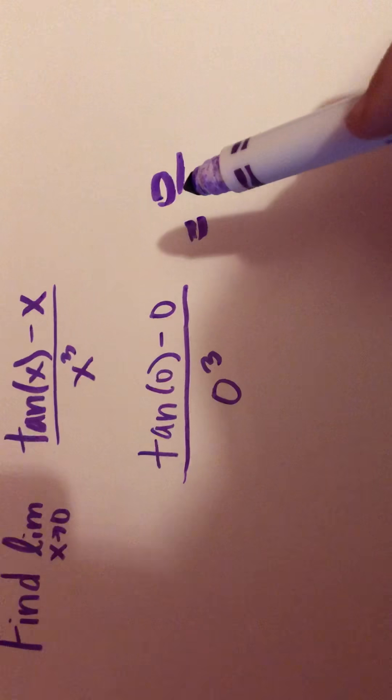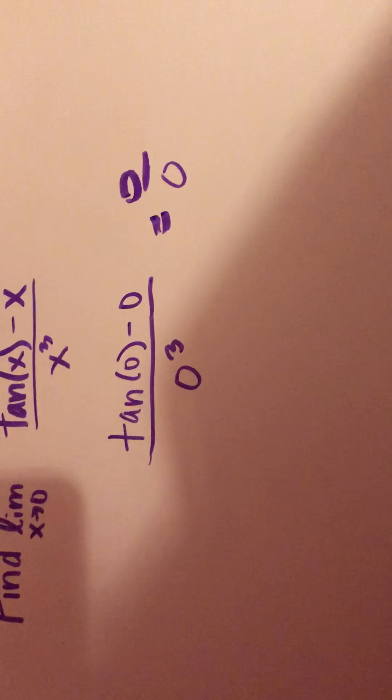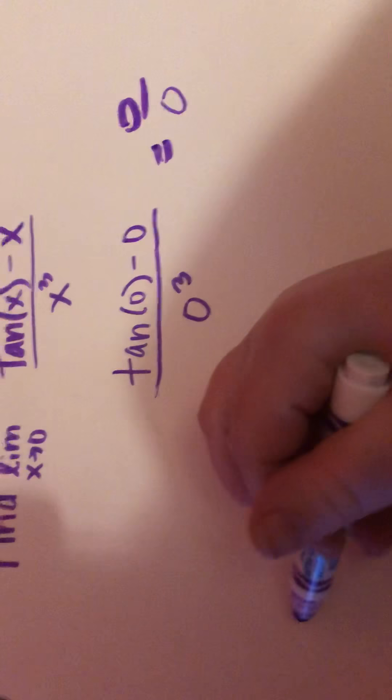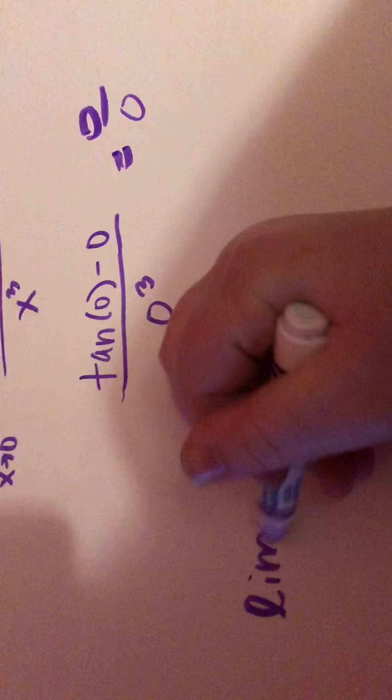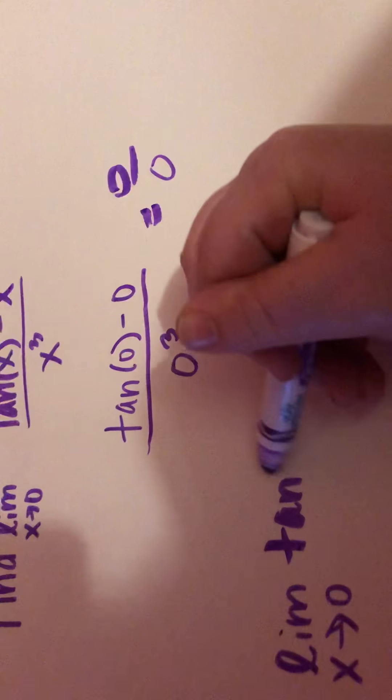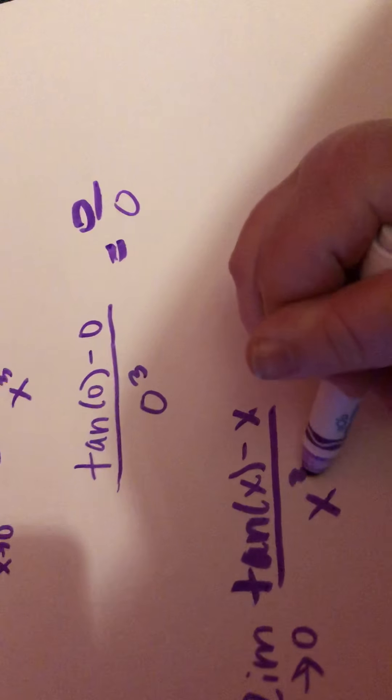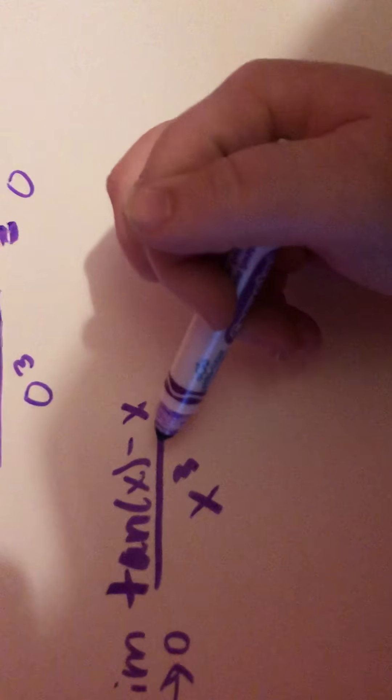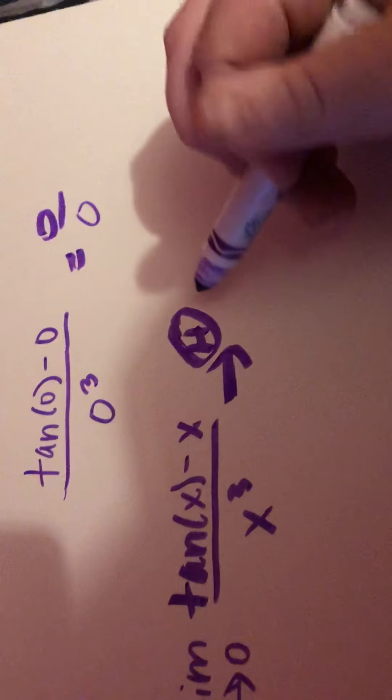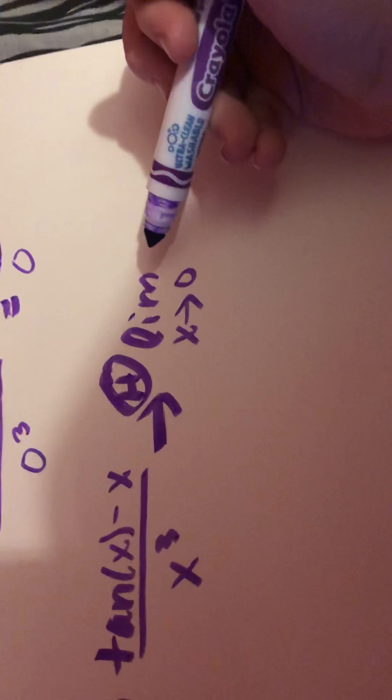So since we get an indeterminate form when we use substitution to find the limit, we can use L'Hôpital's rule. So what we're going to do, limit as x approaches 0, tan of x minus x over x cubed. So we need to take the derivative of the top, which will